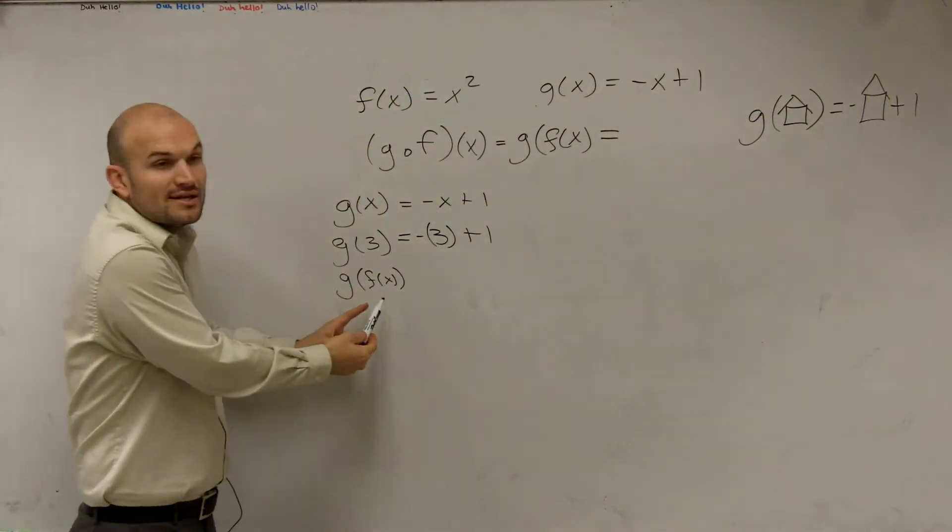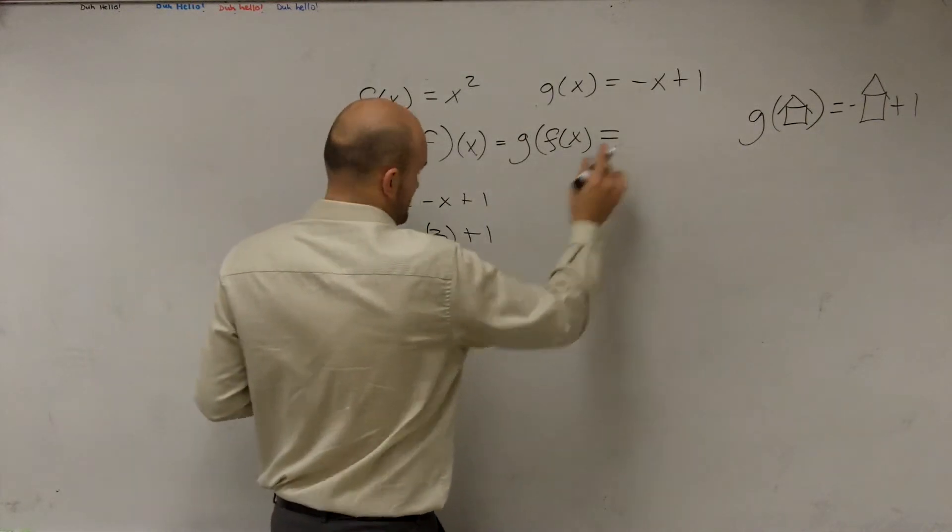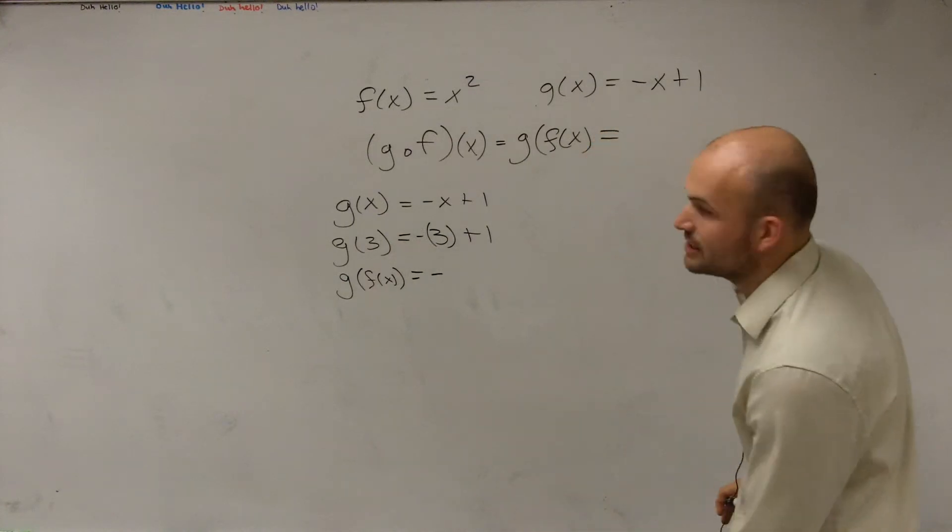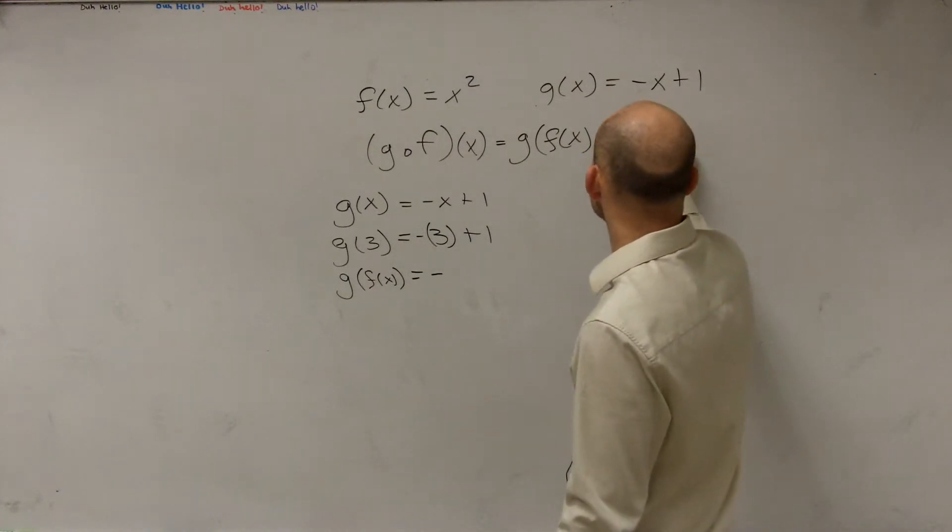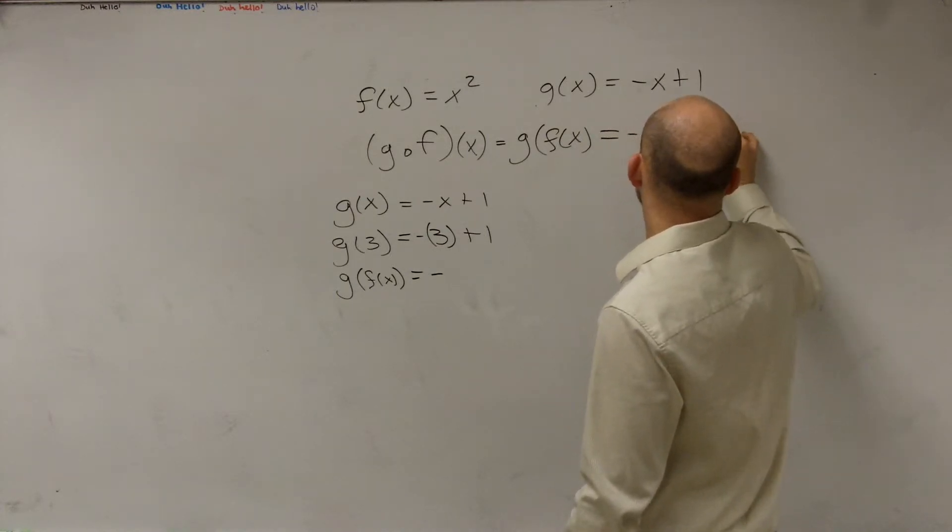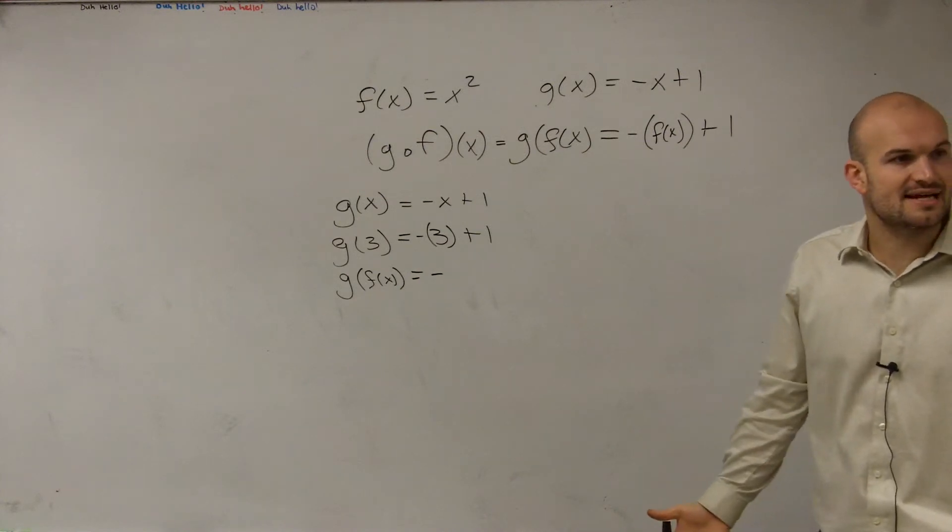So yes, my input is F of x. So that means I'm going to do negative. So what this represents, let's actually just write over here. So G of F of x, that represents a negative F of x plus 1. Well, what's my F of x? My F of x is x squared.